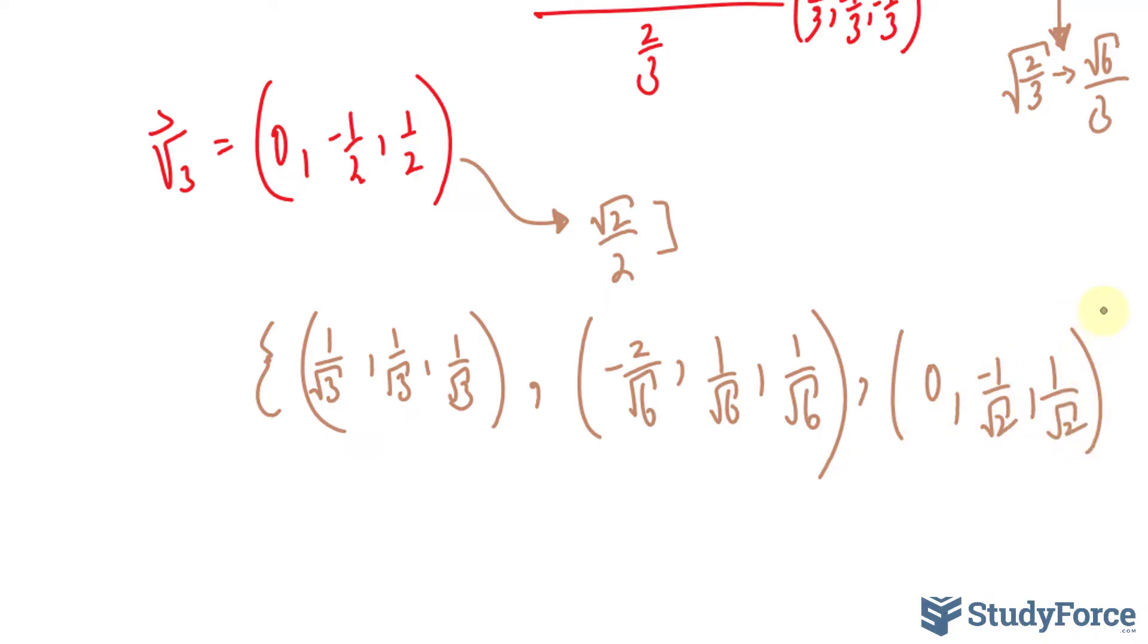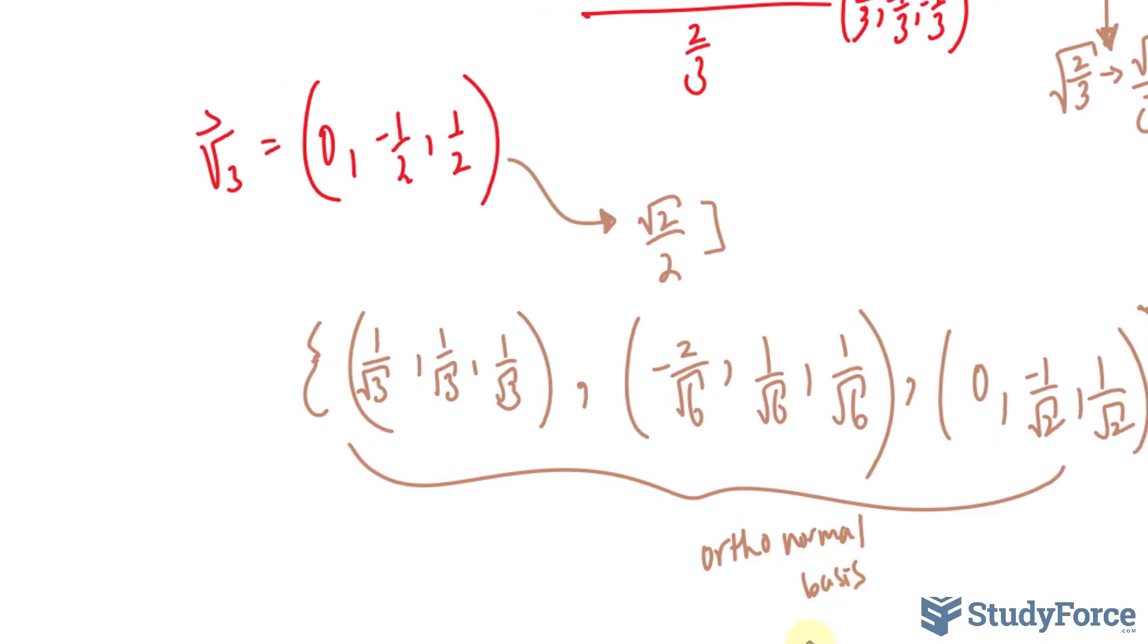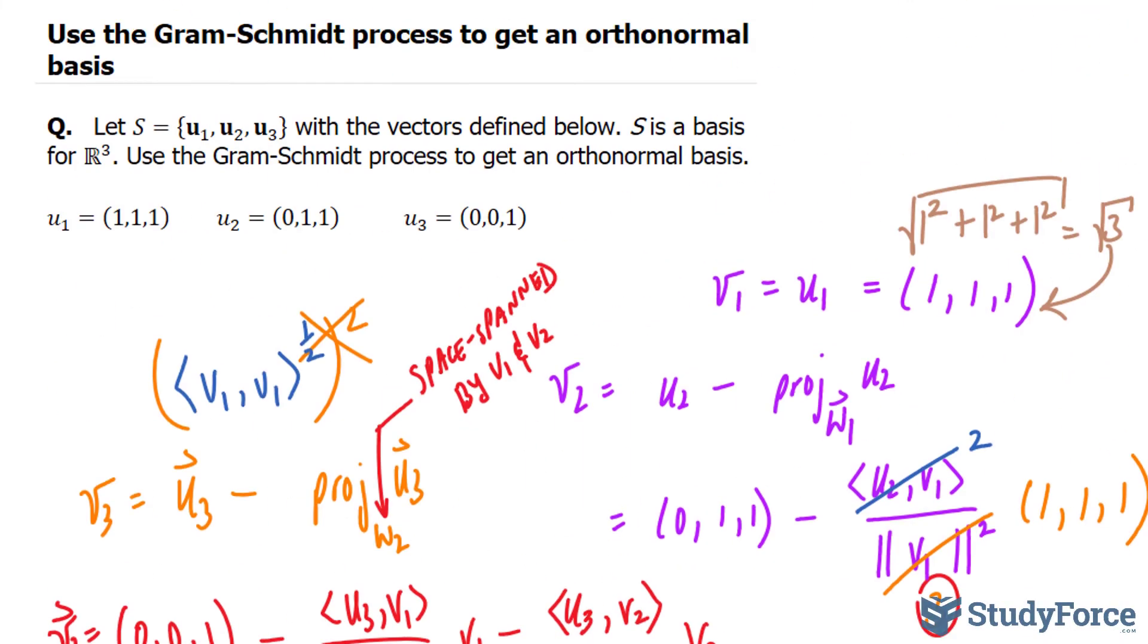Once again, you can rationalize these last two components. So this right here represents the orthonormal basis using the Gram-Schmidt process. And there you have it. That is how to use the Gram-Schmidt process to get an orthonormal basis.